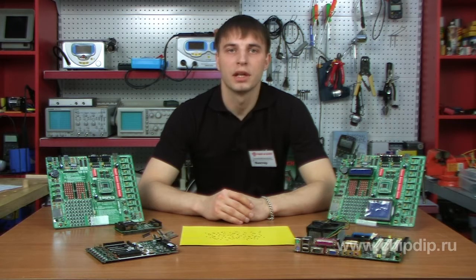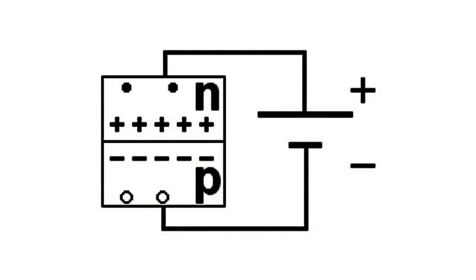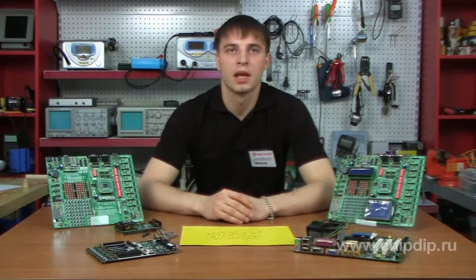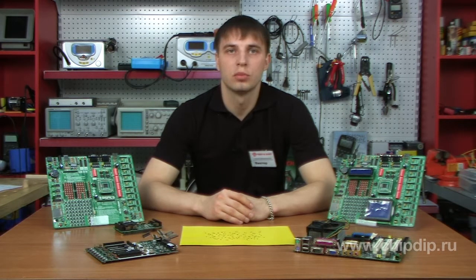In the absence of external voltage in the PN junction, there is a potential barrier and an internal electric field. If we apply reverse voltage to the diode, the height of the barrier will increase. External reverse voltage pushes electrons deeper into the N region. As a result, the depletion area of the PN junction increases.